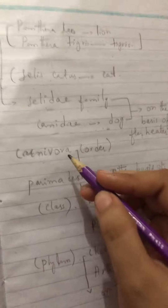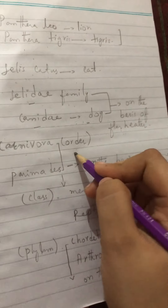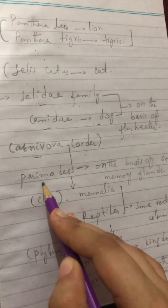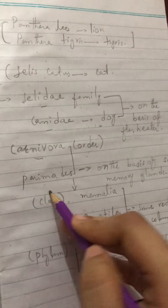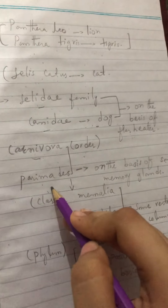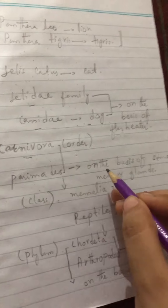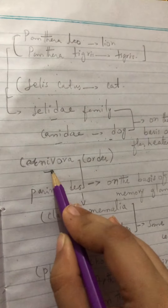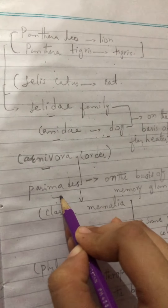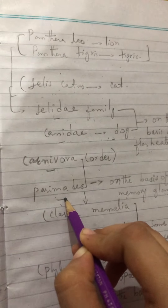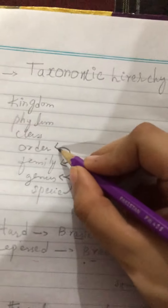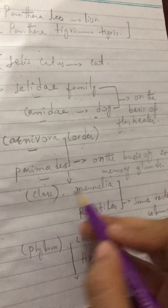So Carnivora is the order. Now we take Primates. We classify Carnivora and Primates together on the basis of some similarities — specifically, they both have the same mammary glands. On the basis of this similarity, they are placed in the same class.